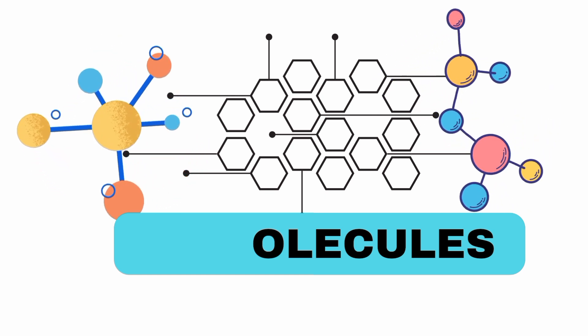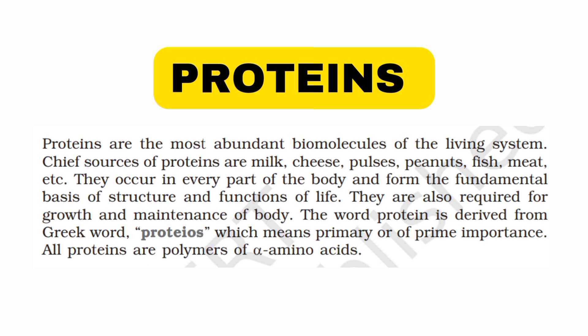Proteins are the most abundant bio-molecules of the living system. The chief sources of proteins include milk, cheese, peanuts, meat, pulses, and fish. They occur in every part of the body and form the fundamental basis of structure and functions of life. The word protein is derived from the Greek word 'Proteus'.